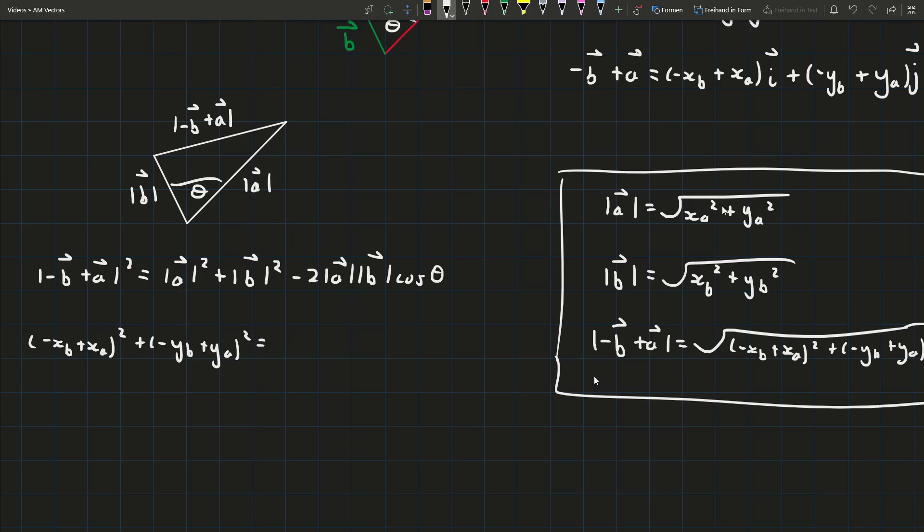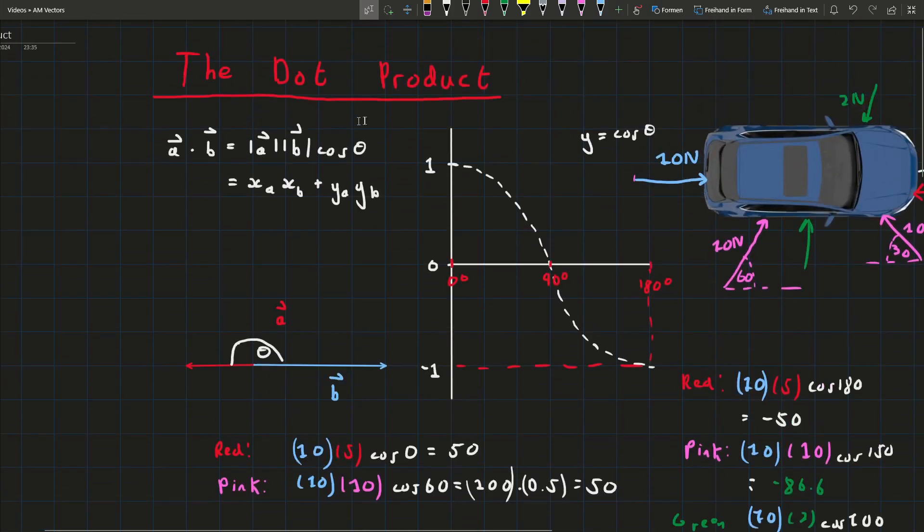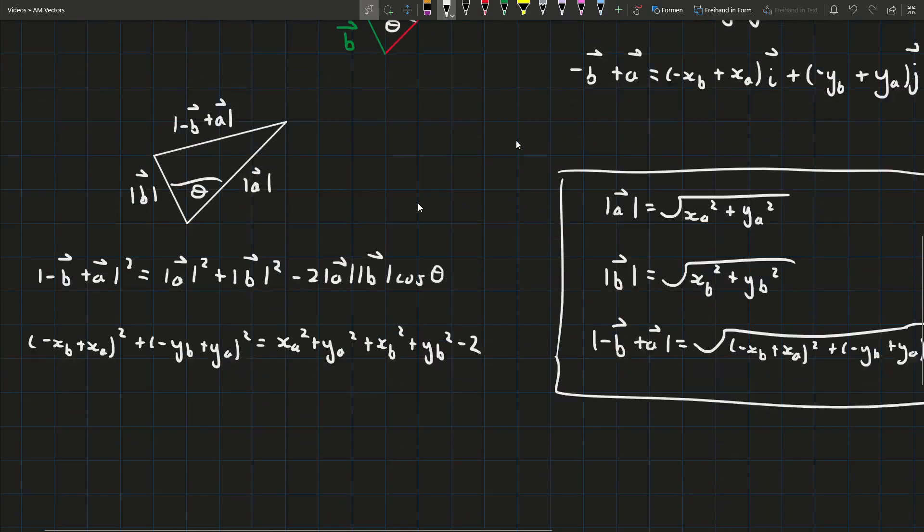And then for the magnitude of a that's this we'll have xa² plus ya² and then for vector b it's the same thing we'll have xb² plus yb² we have minus 2 and then do you notice anything about this? This is actually the definition of the dot product that we had up here. So this right here is actually the dot product of a and b.